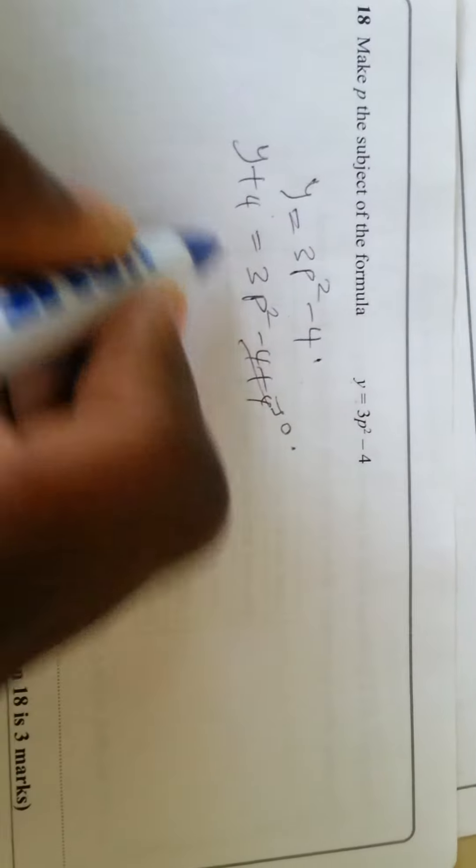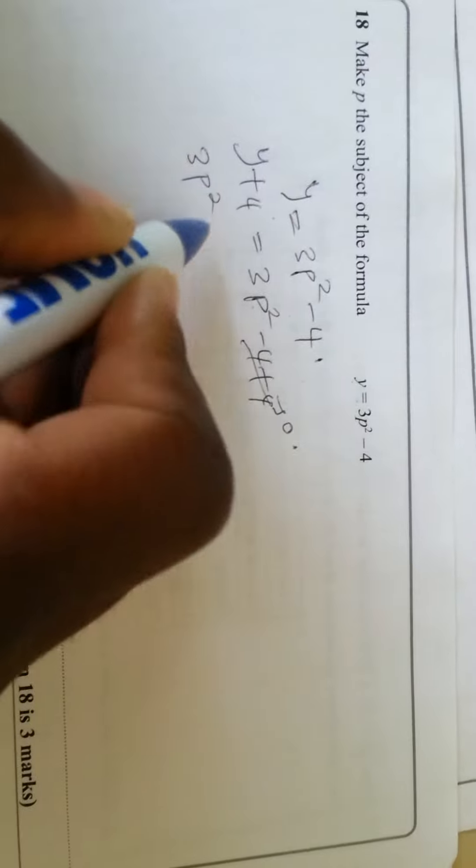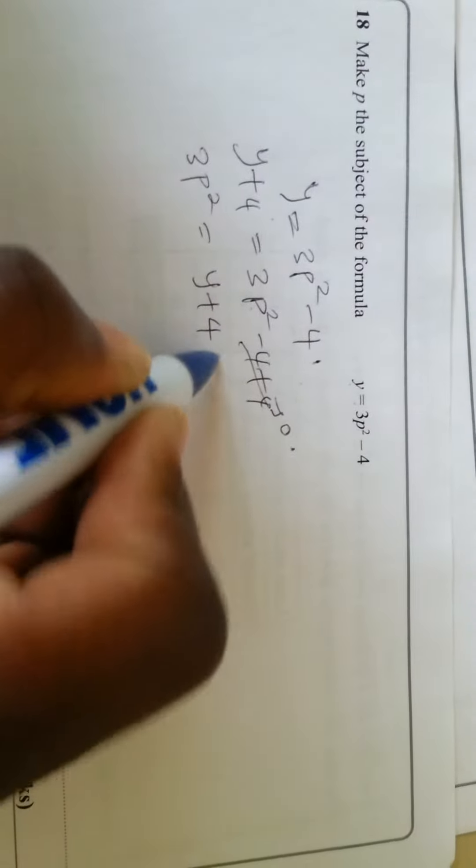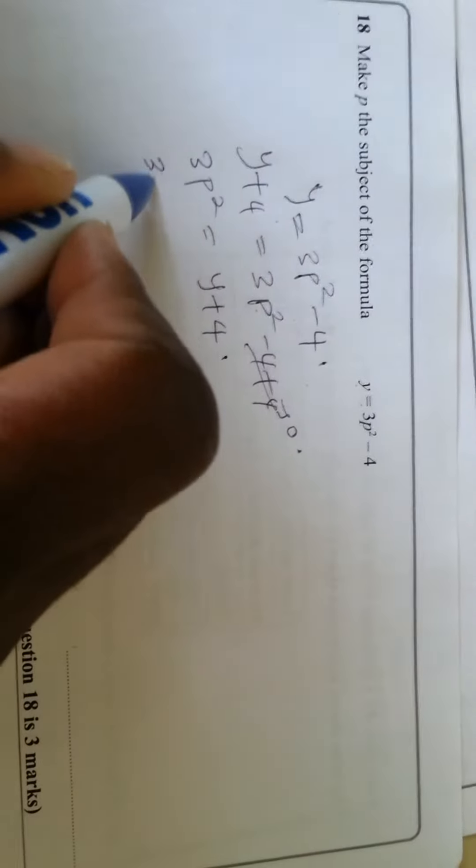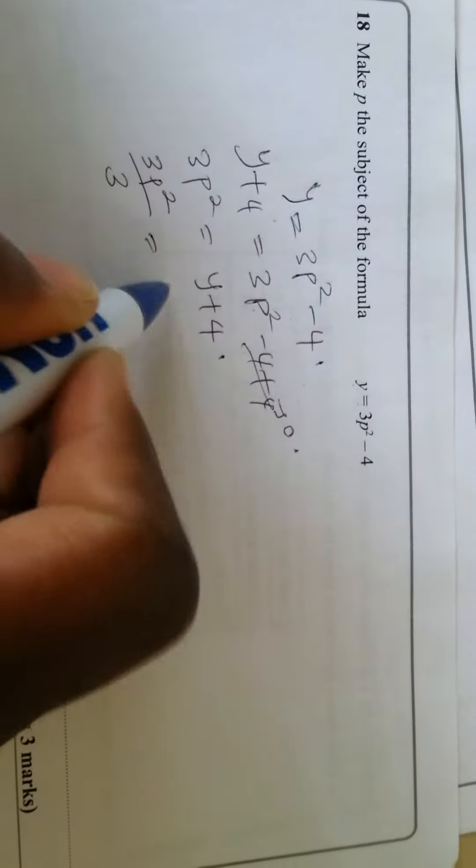Let's divide both sides by 3 to have p² standing on its own. So you have 3p²/3 = (y + 4)/3.